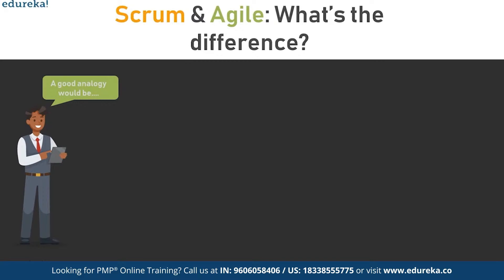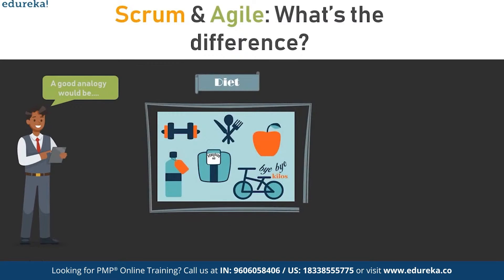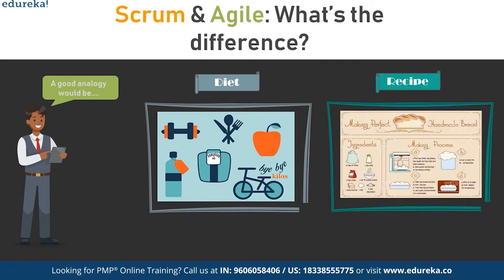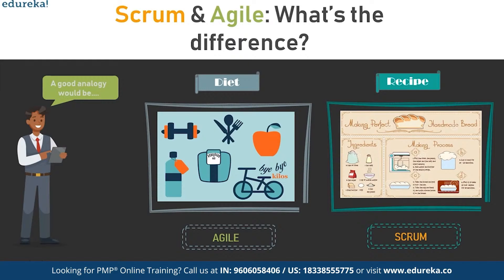The difference between scrum and agile would be like the difference between a recipe and a diet. A diet is a set of methods and practices based on principles and values, whereas a recipe is a framework you can use to implement your vegetarian diet. This is similar to the relation between agile and scrum, where agile is the diet and scrum is the recipe you follow while implementing that diet.